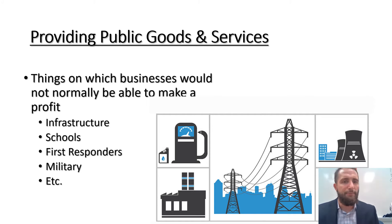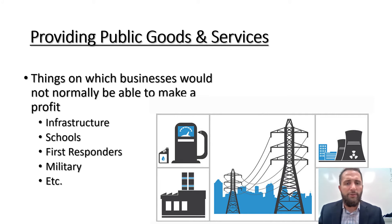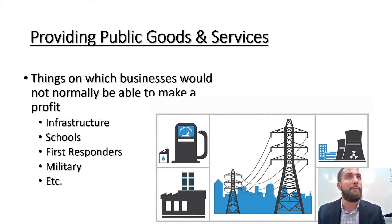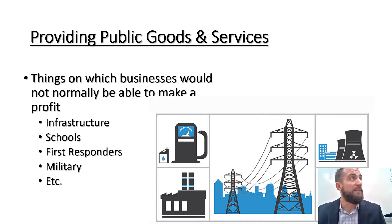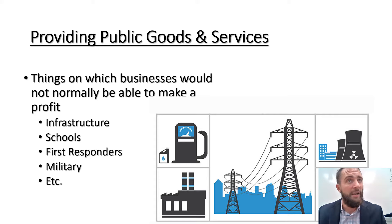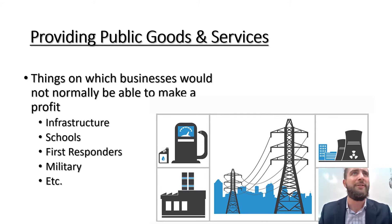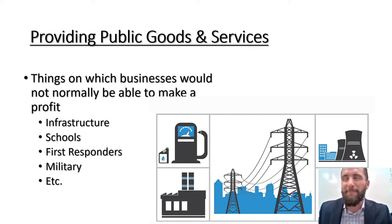The third function that governments play is providing public goods and services. These are things that regular businesses normally just wouldn't be able to make a profit on, so none of them would provide it. The military is the best example — theoretically you could make the military something that people paid for individually, but it wouldn't make a whole lot of sense. You'd have some army lieutenant walking door to door asking if people want to re-up their subscription for military protection.